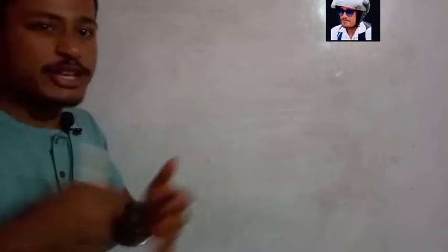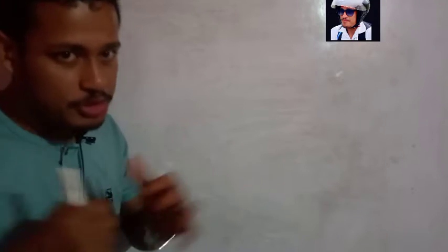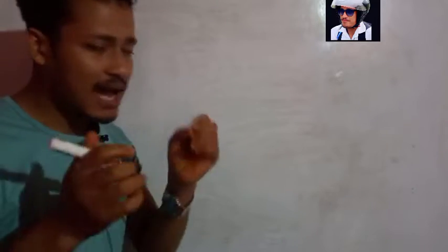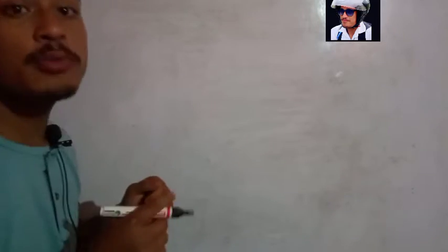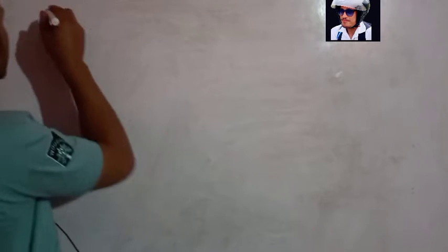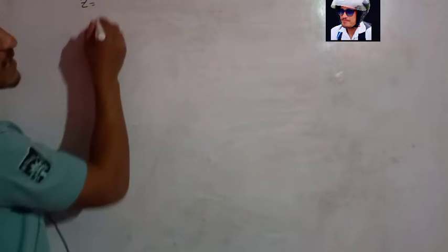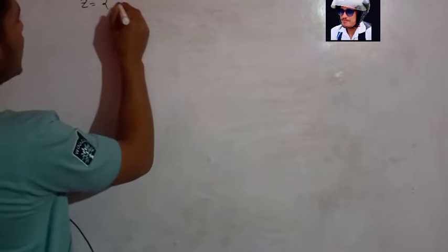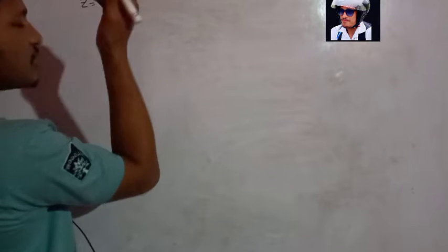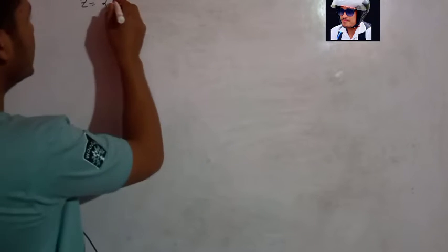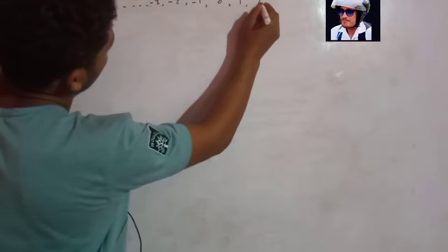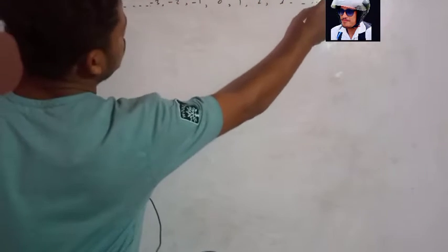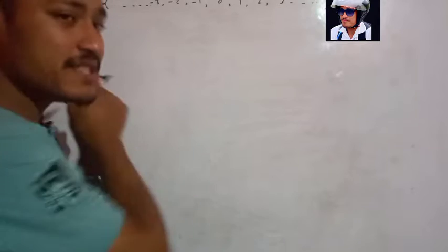Hello guys. This is a group theory video for B.S.C. Mathematics students. Today we will find the automorphism of Z. Do you know Z? This is the set of integers — that means the set containing elements like minus 2, minus 1, 0, 1, 2, 3, and so on. This is the set Z.